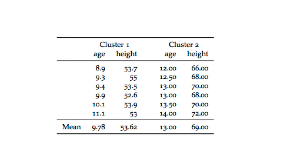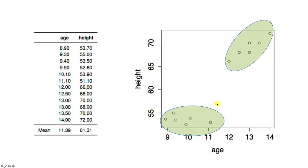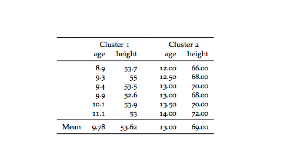Cluster 1 has certain ages and heights, and cluster 2 has the following ages and heights. The mean age and mean height for cluster 1 and the mean age and mean height for cluster 2 represent each group. We can look at the data as just two clusters: one in which all students have age 9.78 and height 53.62, and another in which all students have age 13 and height 69. We've reduced the complexity from 12 down to just 2.